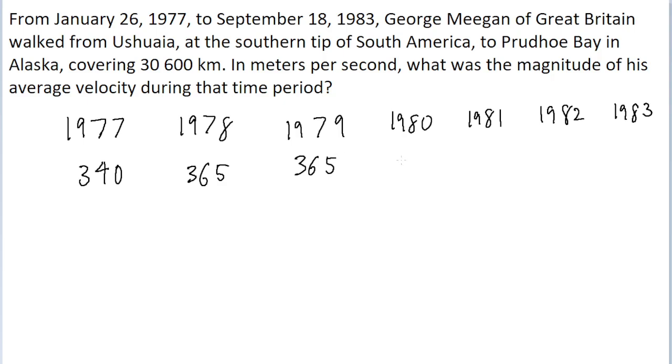Then all of 1980, which is actually 366 days because 1980 was a leap year. All of 1981, 365 days. All of 1982, 365 days.